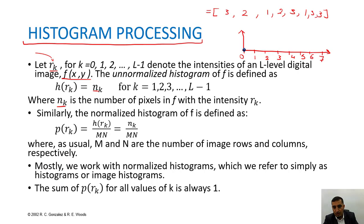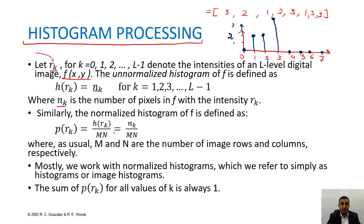There are no values at 0. There are 2 values at intensity 1, 2 values at intensity 2, and 4 values at intensity 3. There are 0 values for intensities 4, 5, 6, and 7. So this is the unnormalized histogram for this image.